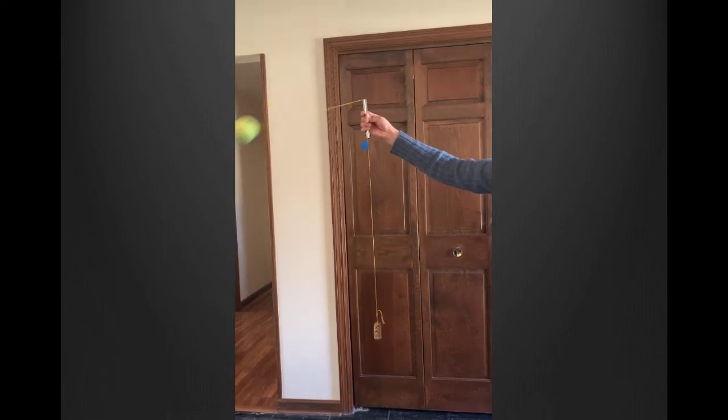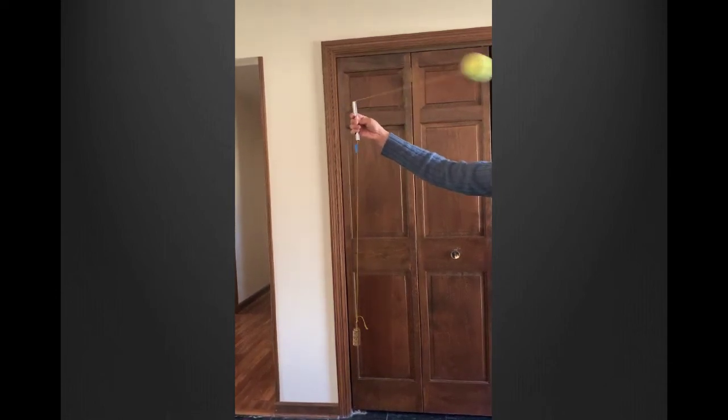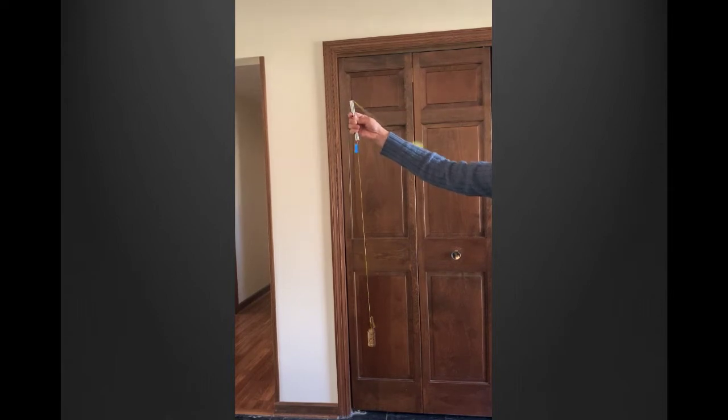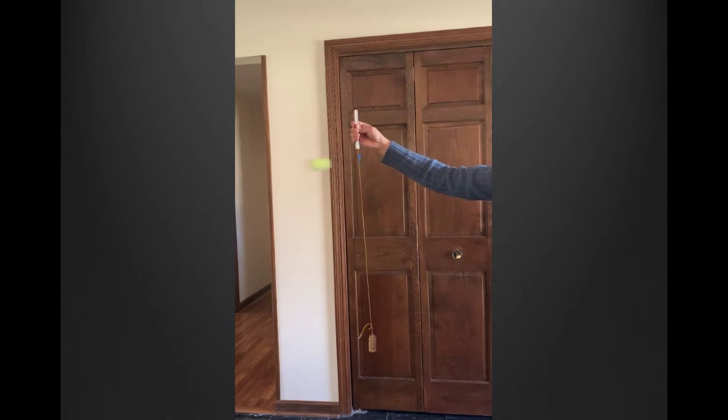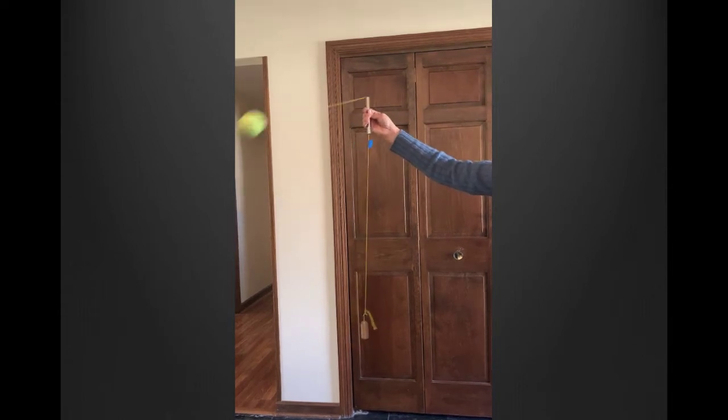In this video we will explore the uniform circular motion of a tennis ball as it is attached to a string and whirled in a circle. We will also see how we can use this apparatus to find the mass of the tennis ball.